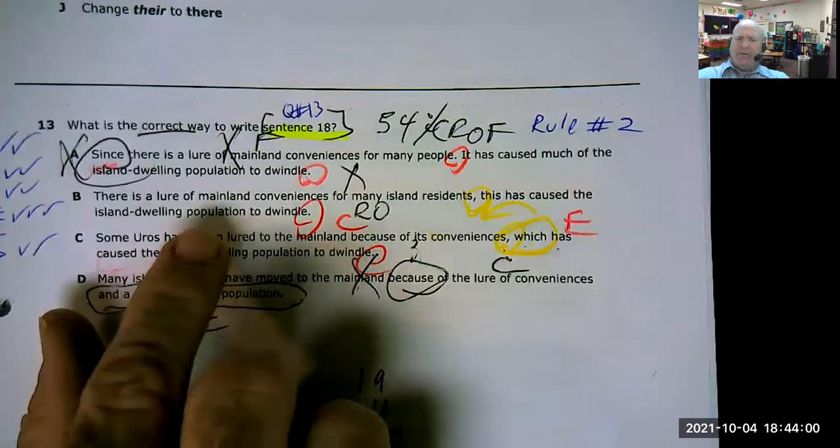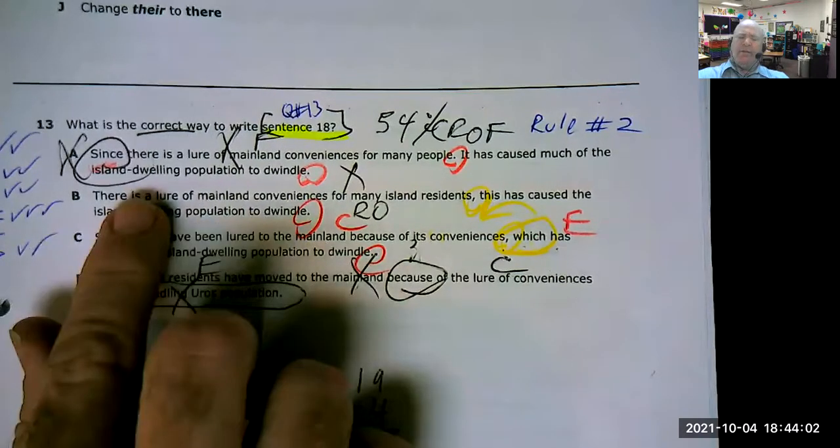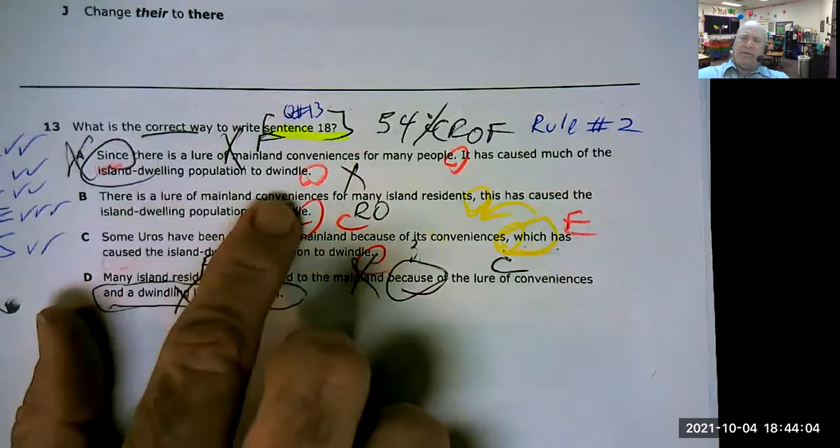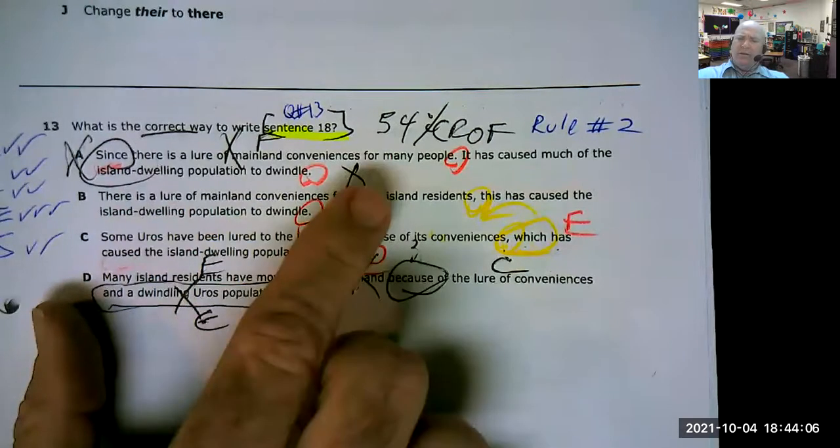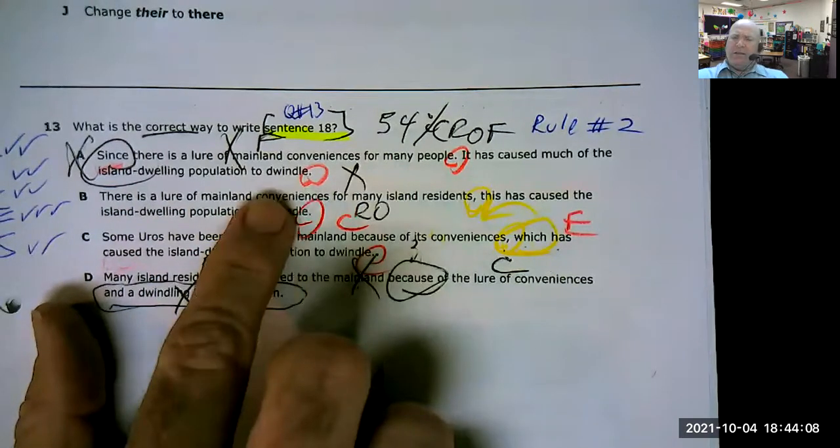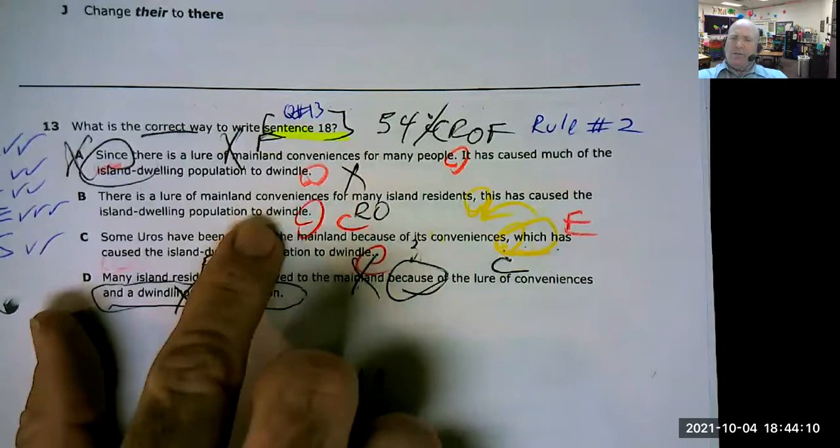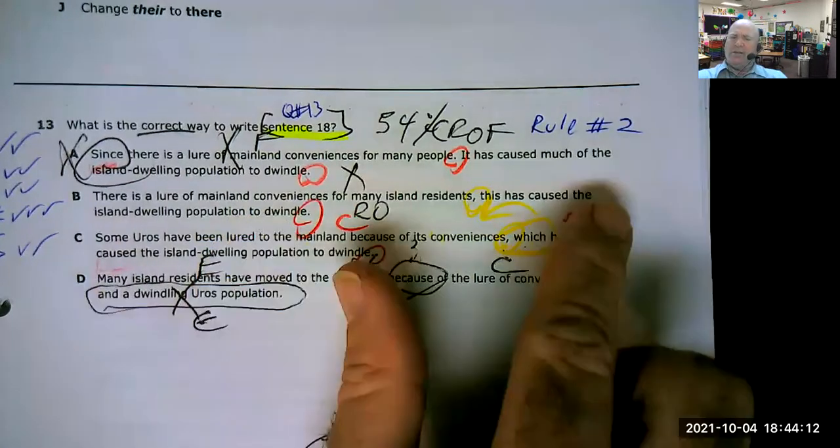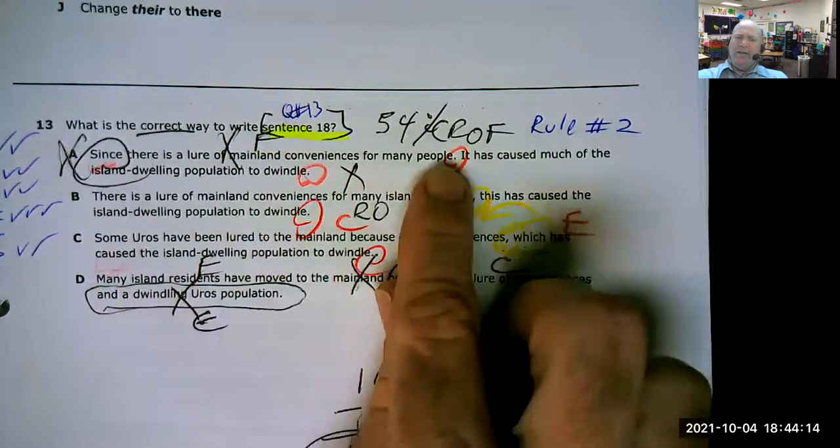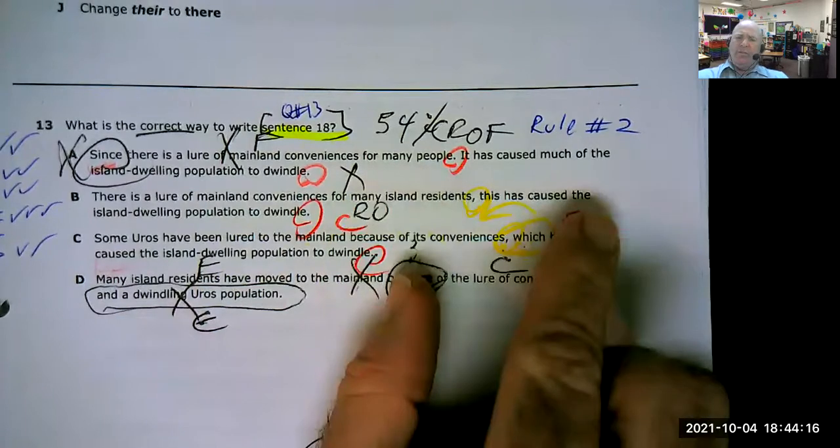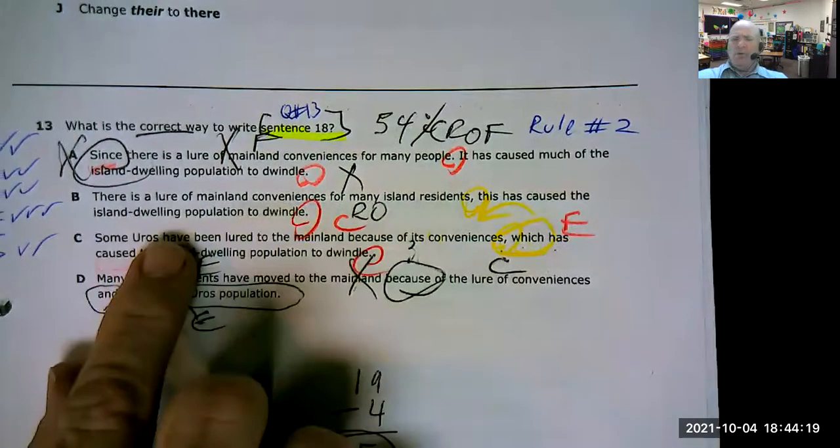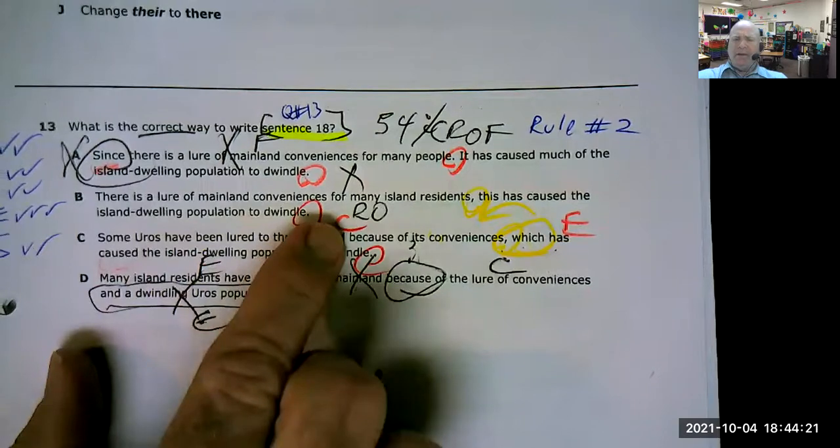This would only have been okay if you would have put a period and a capital on this has caused, and if you look closely what it's saying, it has caused the island population to dwindle. That's true. That's the effect. There is a lure of mainland conveniences for many island residents. Yes, that part was true. So if that's the cause, then there's the effect. This has caused, that is over here, has caused this effect, the island population to dwindle. Because that's a run-on, we're going to eliminate it.